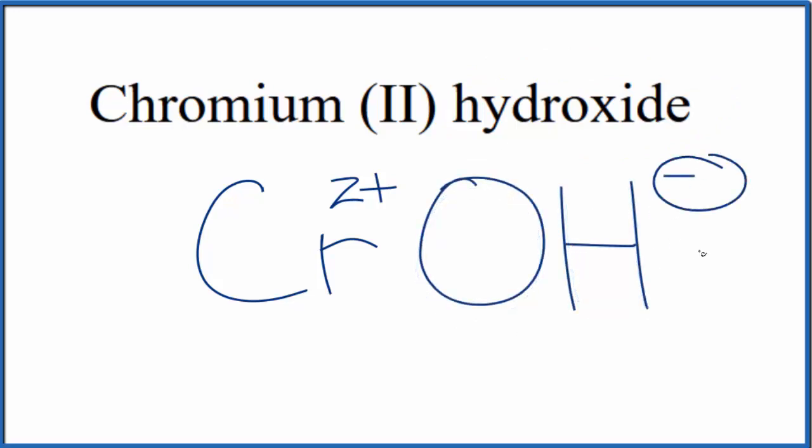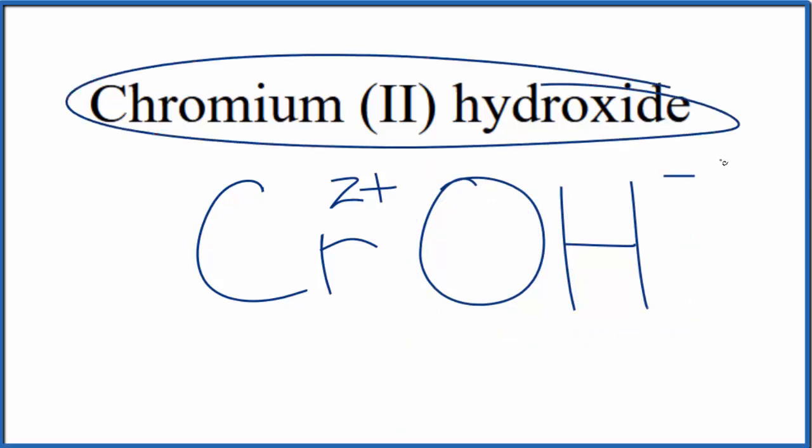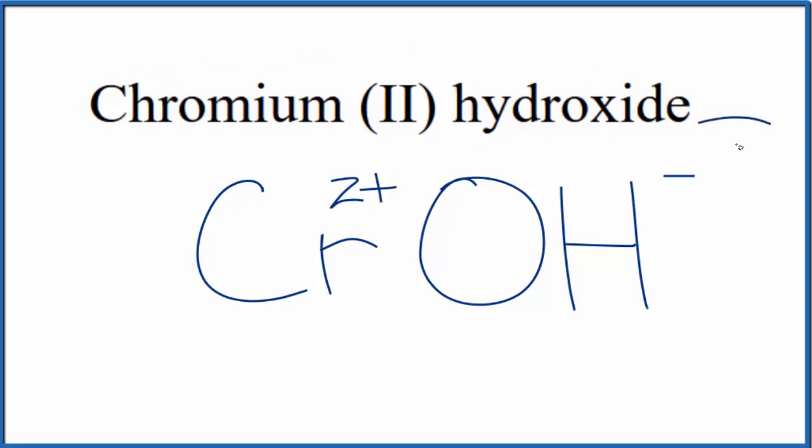And this minus here applies to the whole hydroxide ion. So because chromium two hydroxide is a neutral compound, it doesn't say ion after it. These charges, this two plus and this one minus, they need to add up to zero. We need a net charge of zero.